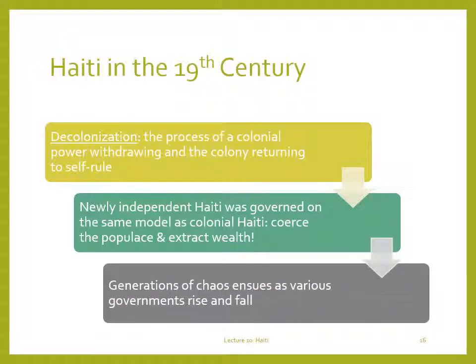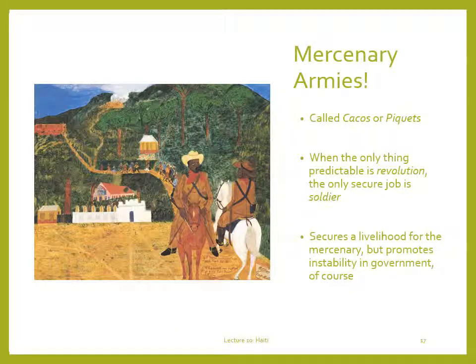The 19th century history of Haitian politics can only be described as chaotic. Dozens of would-be dictators and governments came and went. Most Haitian peasants kept their heads down and simply focused on survival, but others sought to use the chaos to their own benefit. In such an environment, the only reliable, secure profession was that of soldier. The kakos, or piquets as they were known, were a class of professional mercenaries that grew up in the 19th century, selling their services to whichever would-be president for life was willing to pay the most. As soon as one was installed in the capital, they'd change allegiance to another—a way to ensure one's own job security, but it did nothing to ensure the stability and prosperity of Haiti.